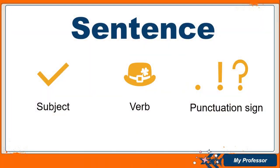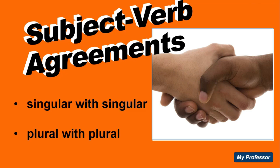We have to acknowledge that English grammar is economic, for which there are not too many things that we need to take into account when formulating sentences. A sentence in English needs to have at least three elements: a subject, a verb, and a punctuation sign. However, subjects and verbs also need to agree with each other.